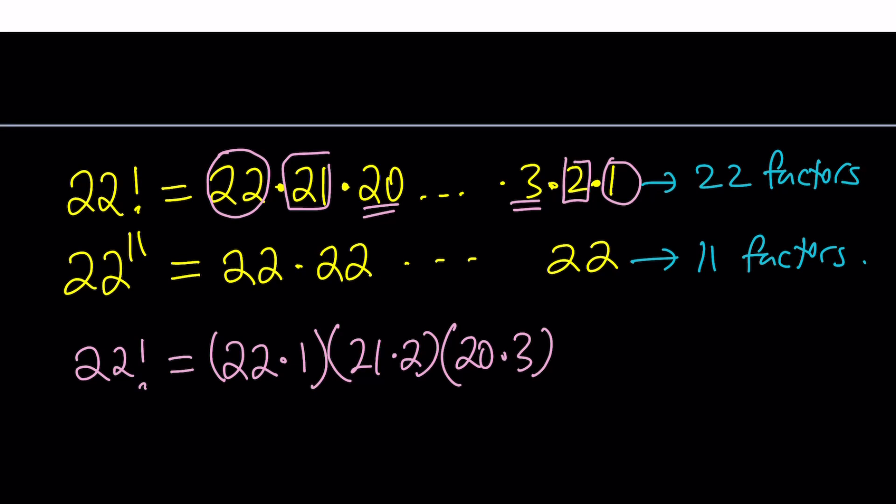For example, 22 plus 1 is 23, and 21 plus 2 is 23 and 20 plus 3 is 23. So they all give us the same thing and they should. This also gives you an idea where to stop, because at some point you're going to reach the minimum for the first factor and the maximum for the second factor.